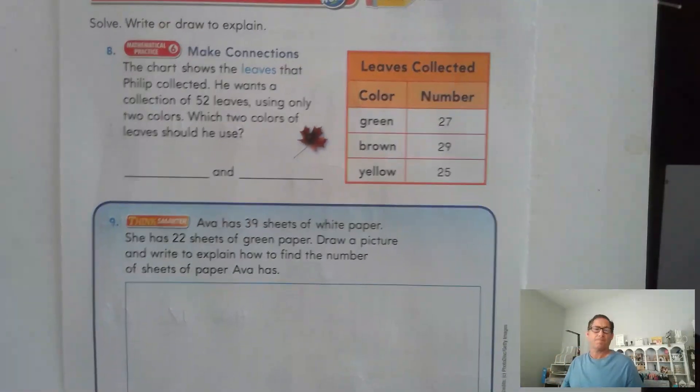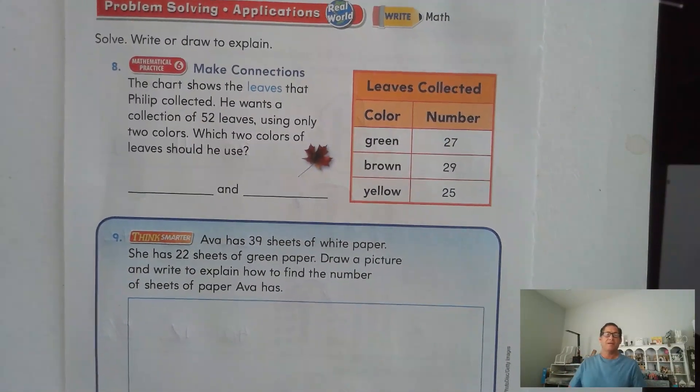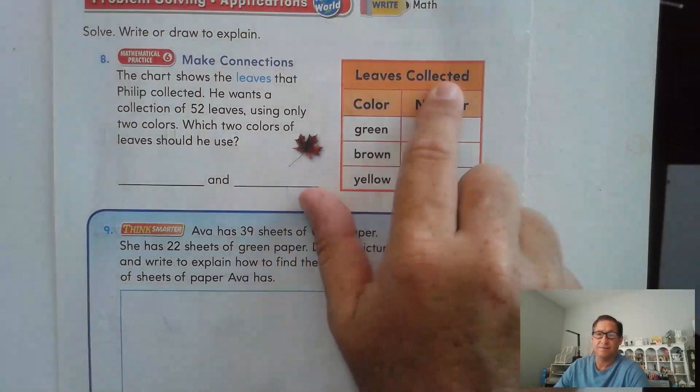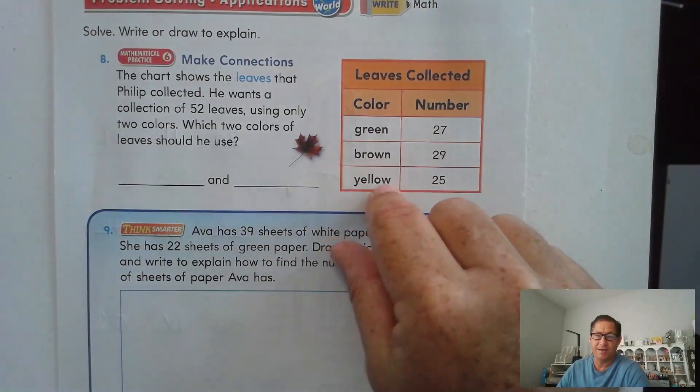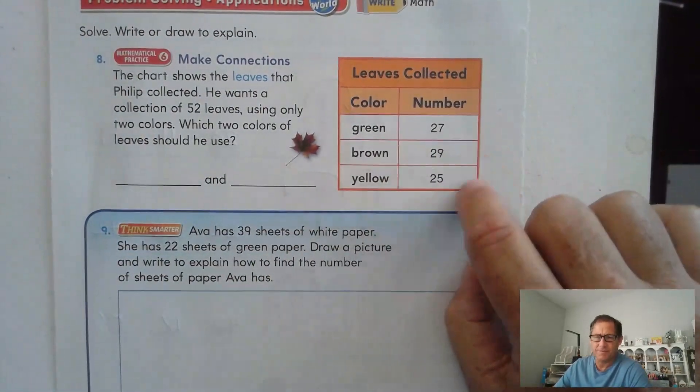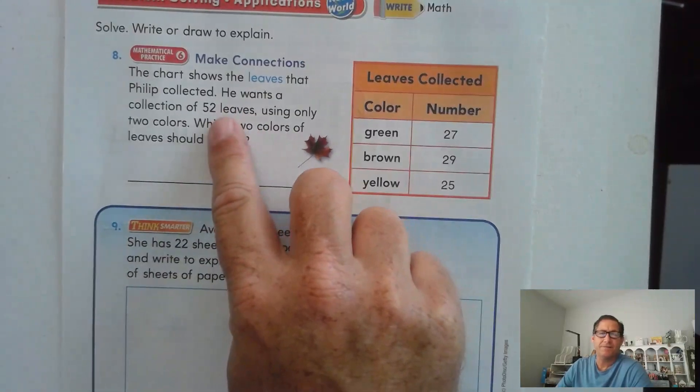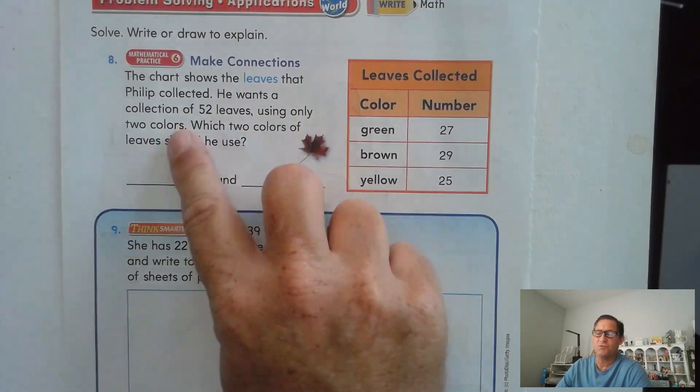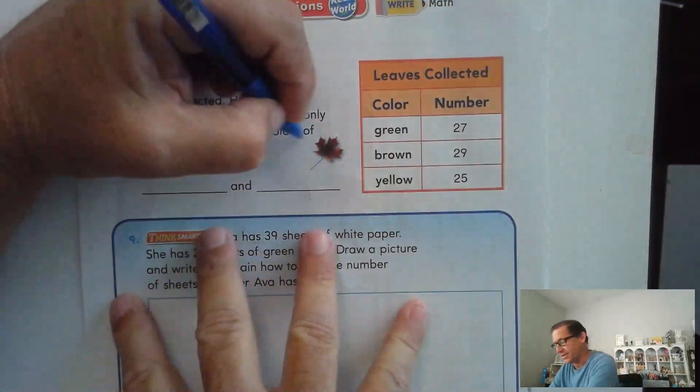Page 180. The chart shows the leaves that Philip collected. So we see leaves collected. We have three different colors, green, brown, and yellow, and the number of each one of those colors. Alright. He wants a collection of 52 leaves using only two colors. Which two colors of leaves should he use?